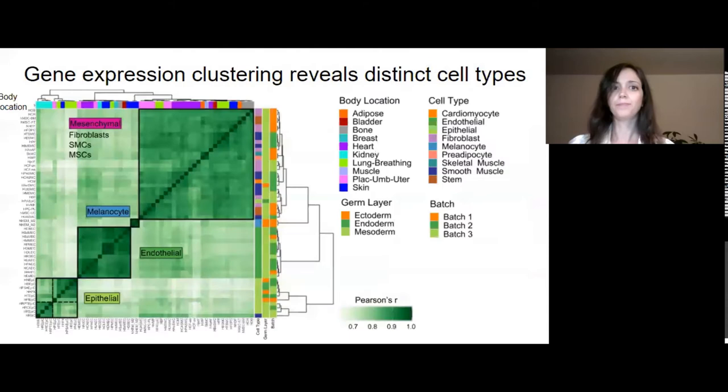The first thing that we did was clustering our primary cells by gene expression. As you can see on the slide, we have cells extracted from multiple sites of the body, so we were interested to see if the anatomic site had a stronger or weaker effect than the cell type on the clustering. It turns out that we could observe a pretty strong clustering by cell type, and in particular we could identify four main cell types: mesenchymal cells, which included fibroblasts, smooth muscle cells, and mesenchymal or adult stem cells; melanocytes; endothelial cells; and epithelial cells.